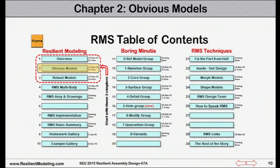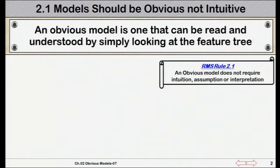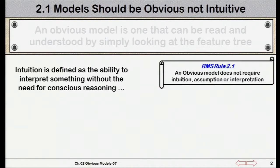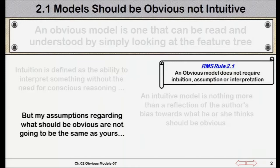The next chapter is Obvious Models — a prerequisite to doing any resilient modeling, and it's incredibly simple. An obvious model is one that can be read and understood by simply looking at the feature tree. Intuition is defined as the ability to interpret something without conscious reasoning. An intuitive model is nothing more than a reflection of the author's bias toward what he or she thinks should be obvious, but those assumptions are not going to be the same for everyone.